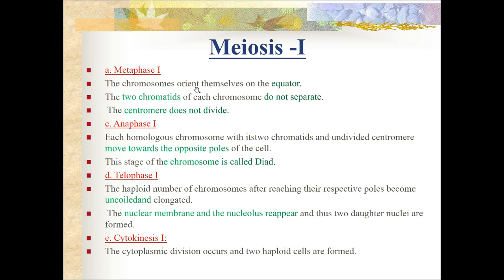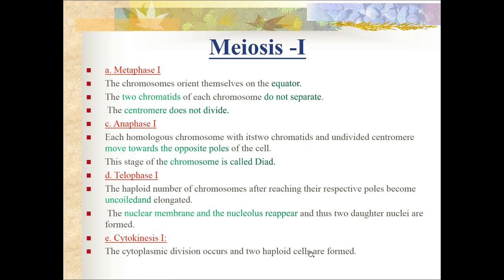During metaphase I, chromosomes orient themselves on the equator, but the two chromatids of each chromosome do not separate and the centromere does not divide. During anaphase I, each homologous chromosome with its two sister chromatids and undivided centromere moves towards the opposite pole - called a dyad. During telophase I, the haploid number of chromosomes become uncoiled and elongated at the poles, the nuclear membrane and nucleolus reappear, and cytokinesis I produces two haploid cells.